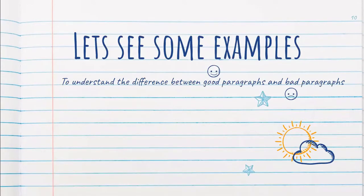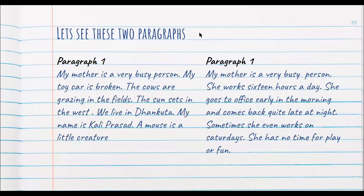Let's look at two paragraphs. Paragraph number one: 'My mother is a very busy person. My toy car is broken. The cows are grazing in the fields. The sun sets in the west. We live in Dhankota. My name is Kali Prasad. A mouse is a little creature.'